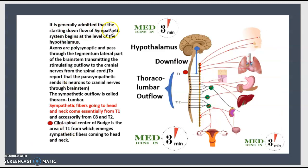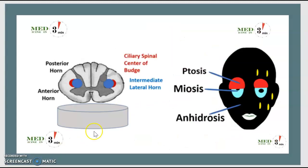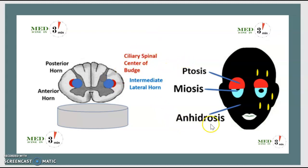The sympathetic system begins at the level of the hypothalamus and goes down to the thoracic-lumbar cord. Sympathetic fibers going to the head and neck come essentially from T1, at the ciliary spinal center of Budge. Interruption of the sympathetic pathway at this point gives Horner syndrome, which presents with ptosis, miosis, and anhidrosis.